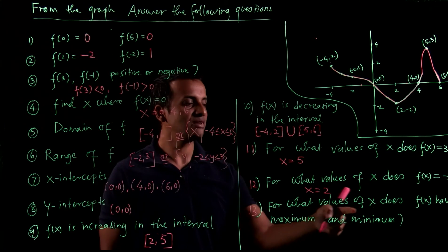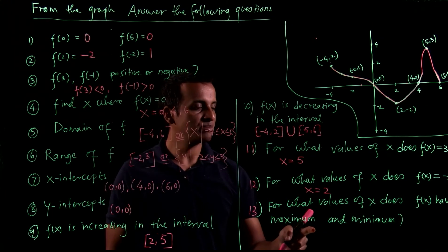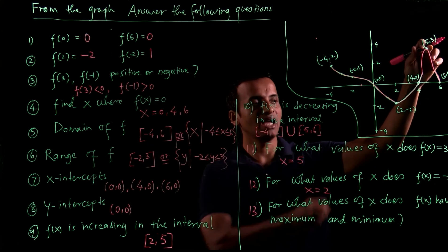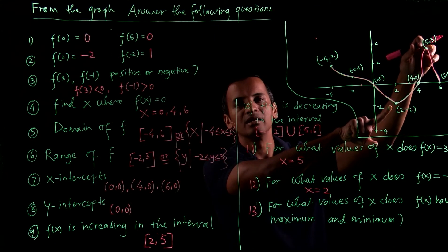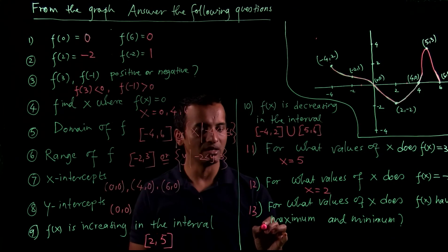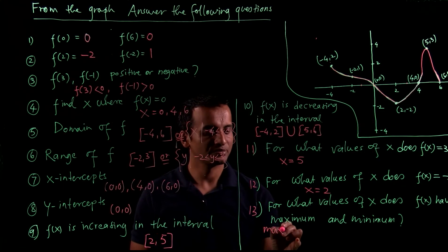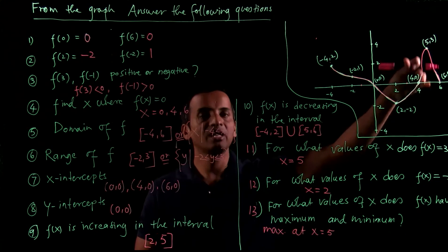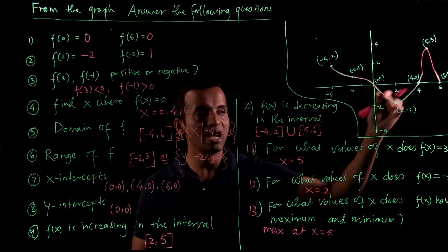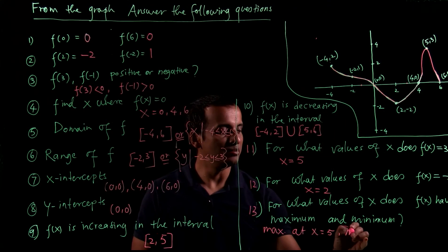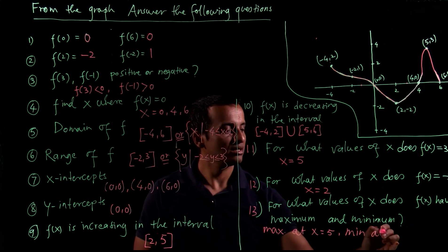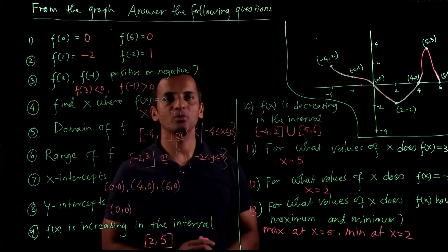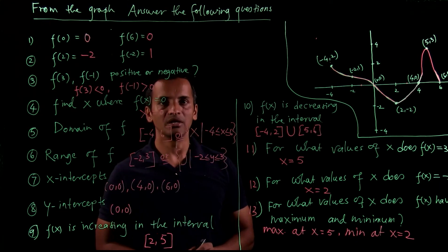Number 13 is: for what values of x does f(x) have a maximum and minimum? The maximum is at x = 5, because that is the highest peak. The minimum is at x = 2. So this is how we answer questions about a given graph. Thank you, guys.